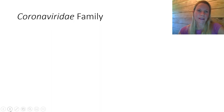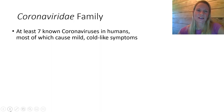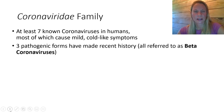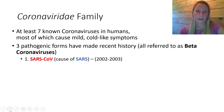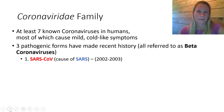First, let's talk about the family coronavirus. There are at least seven known coronaviruses that circulate in human populations, most of which have mild or cold-like symptoms. There are three pathogenic forms that have made recent history and cause significant disease in humans. They are all part of a subcategory we call beta coronavirus. The first I'd like to talk about is SARS-CoV, also referred to as SARS-CoV-1 — the original SARS virus, the cause of the disease we call SARS, which stands for Severe Acute Respiratory Syndrome.